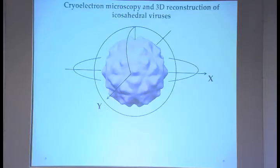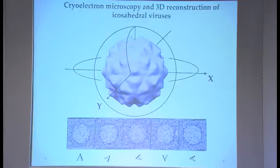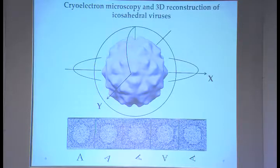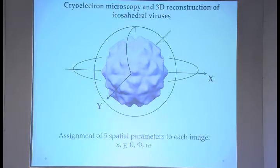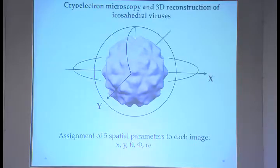For viruses, once you have images as 2D projections of the 3D particle, you need to assign five spatial parameters to each image: x, y to center the particle, plus the projection angles and in-plane angle, which define how your virus was oriented to generate a certain projection.